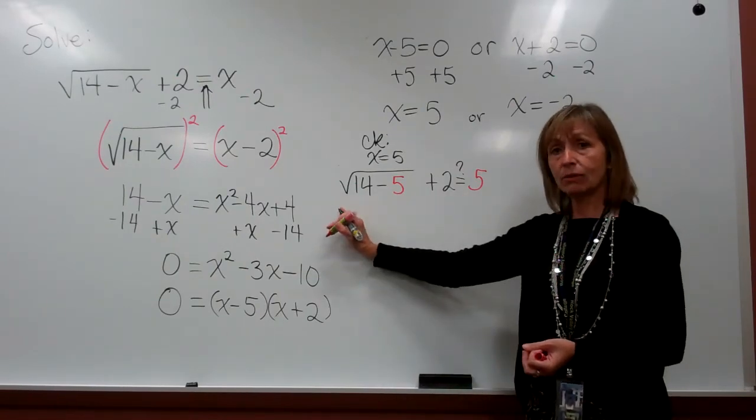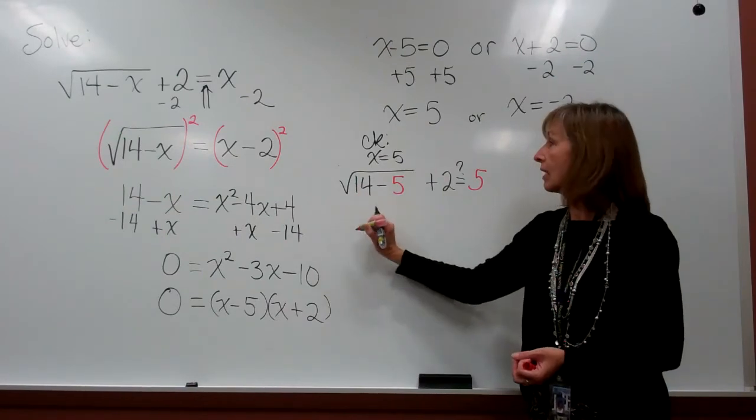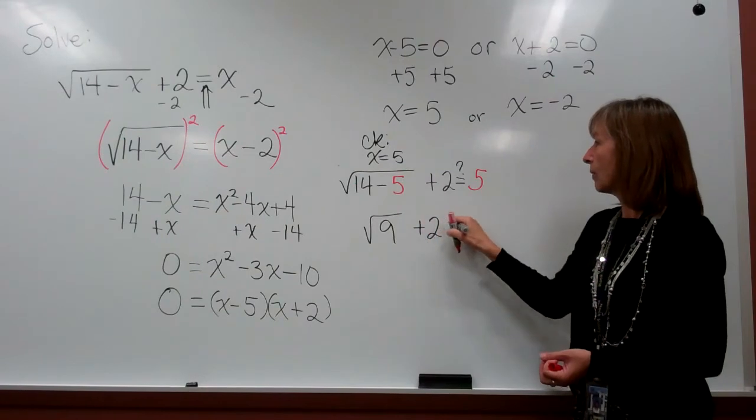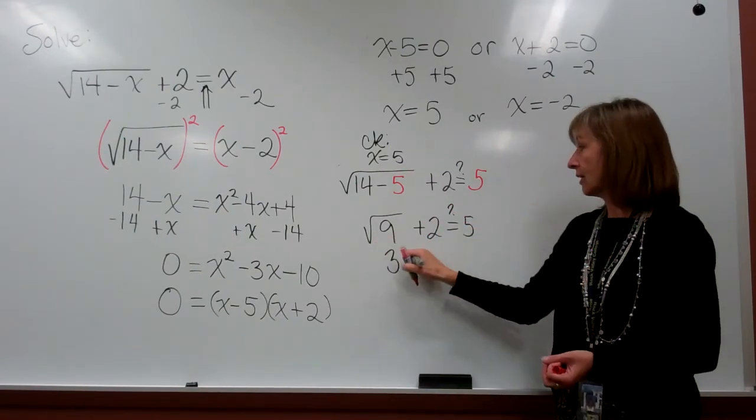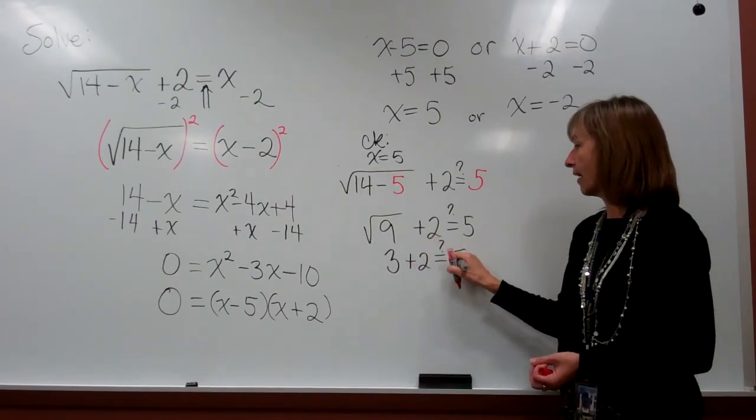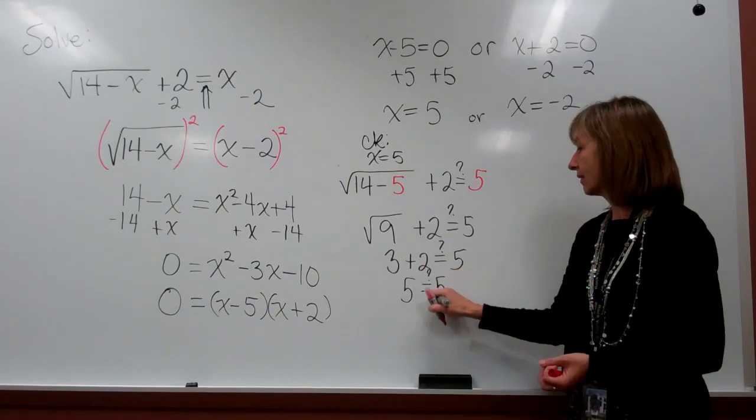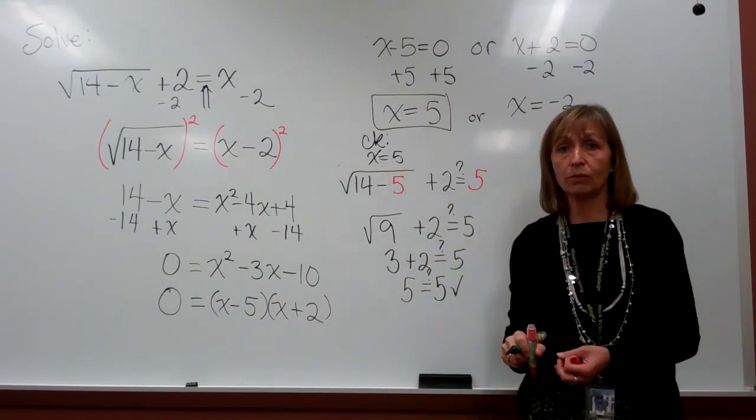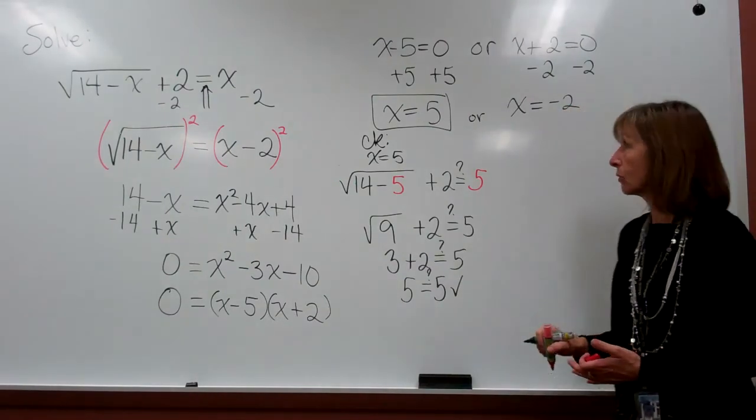On the left side of the equal sign, underneath the radical, we have 14 minus 5, which is 9. So, we have the square root of 9 plus 2. We want to know if that'll come out to be 5. Square root of 9 is 3. So, 3 plus 2, is that the same as 5? Yes, 5 is the same as 5. So, x equals 5 is a solution to our original equation.